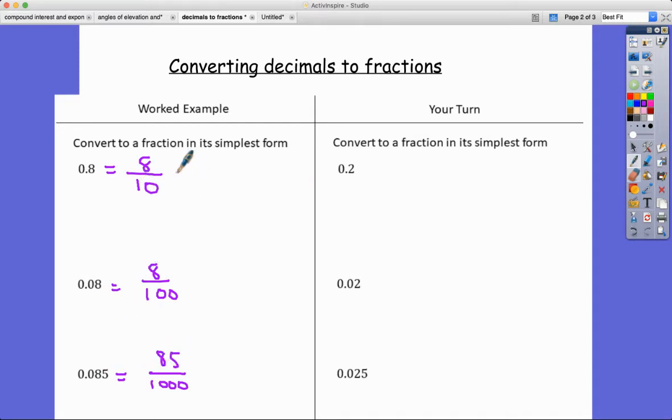Once we've done that we've converted it into a fraction, but we haven't quite finished because it does ask us to put it in its simplest form. In this case, the highest common factor here is two, so it'd be four fifths. In this one, the highest common factor is actually four, so it will be two over 25. And in this one, here's a top tip: if you've got a multiple of five on top, often five is the highest common factor. How many fives go into 85? It's 17. And how many fives go into one thousand? It's two hundred.